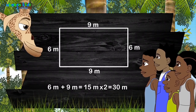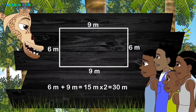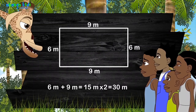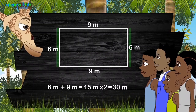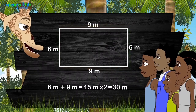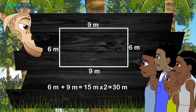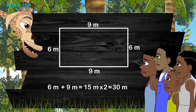Do you know why? Let me tell you now. This shape has four sides, and each two sides are the same. With the rectangle, you can calculate the perimeter by adding the length plus the width and multiplying by two.